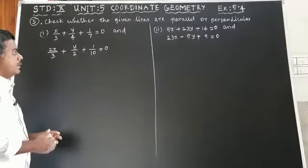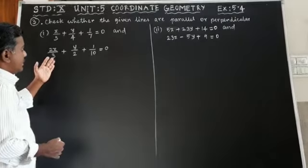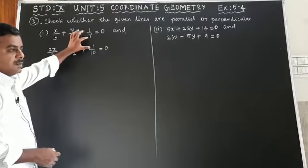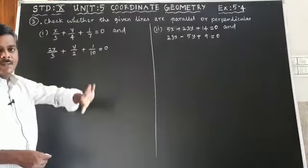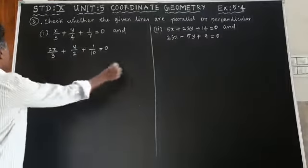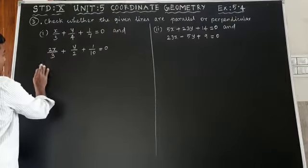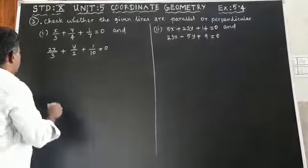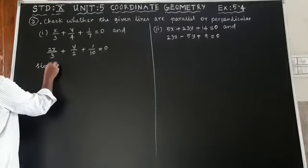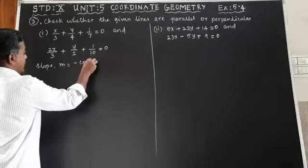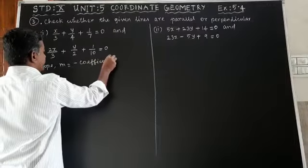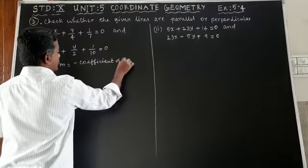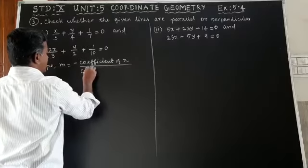Now I am going to verify using the concept of slope. If slopes are equal for the given two lines then the two straight lines are parallel. It is given in the form ax + by + c = 0, so slope m is equal to minus the coefficient of x divided by the coefficient of y.